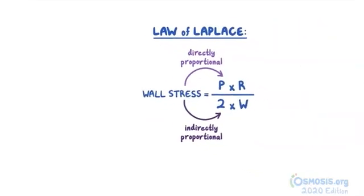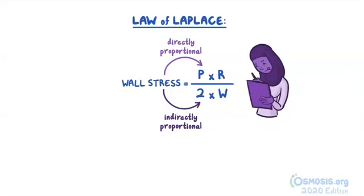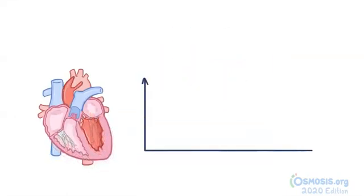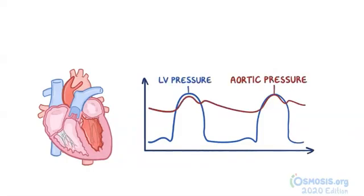It's important to note that this formula isn't used in clinical practice. Instead, clinicians simplify the equation by eliminating two variables — radius and wall thickness. So for simplicity's sake, left ventricular wall stress during ejection is proportional to left ventricular pressure during ejection. And if we assume that left ventricular pressure during ejection equals aortic pressure during ejection, then left ventricular pressure during ejection equals what we commonly know as systolic blood pressure.